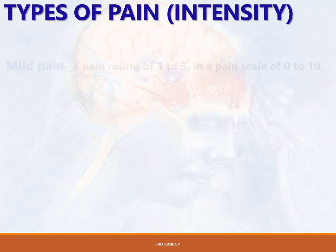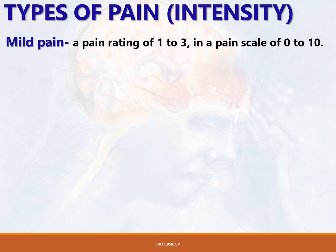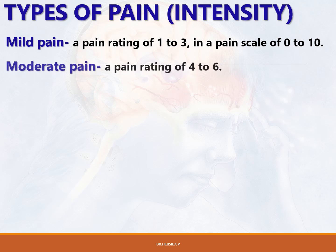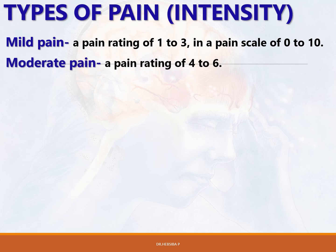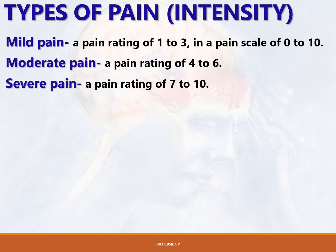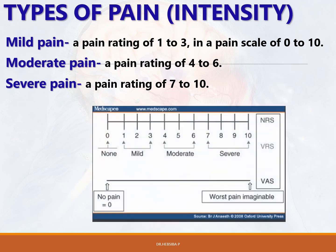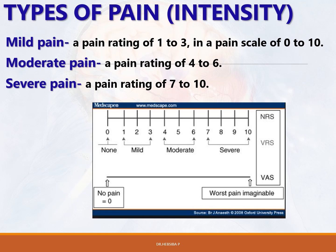Types of pain based on intensity: using a pain scale of 0 to 10, mild pain is rated 1 to 3, moderate pain is rated 4 to 6, and severe pain is rated 7 to 10. A score of 0 means no pain, and 10 represents the worst possible pain.